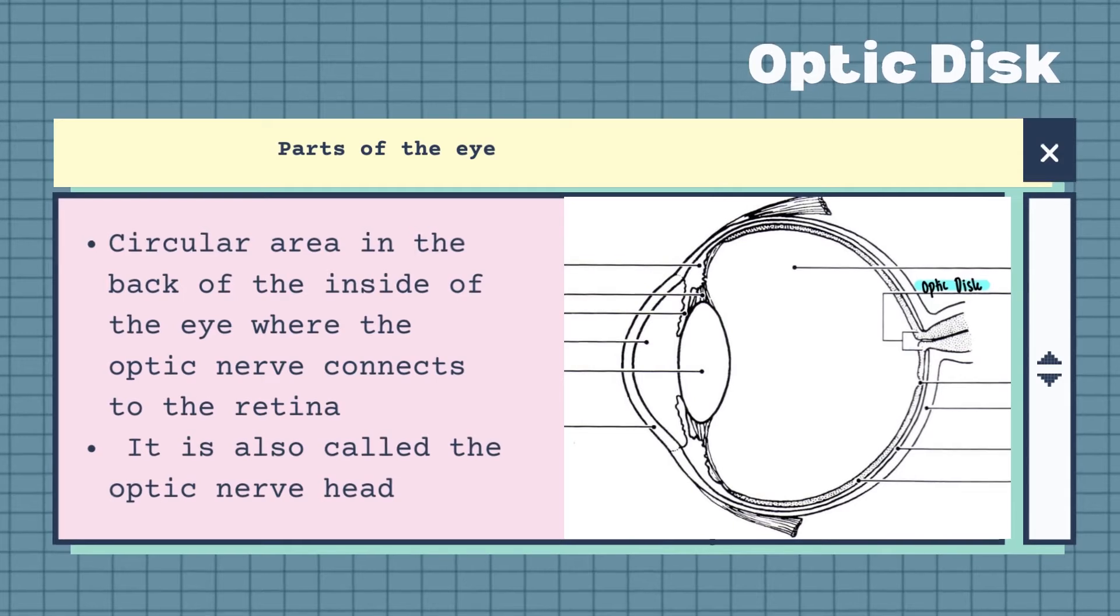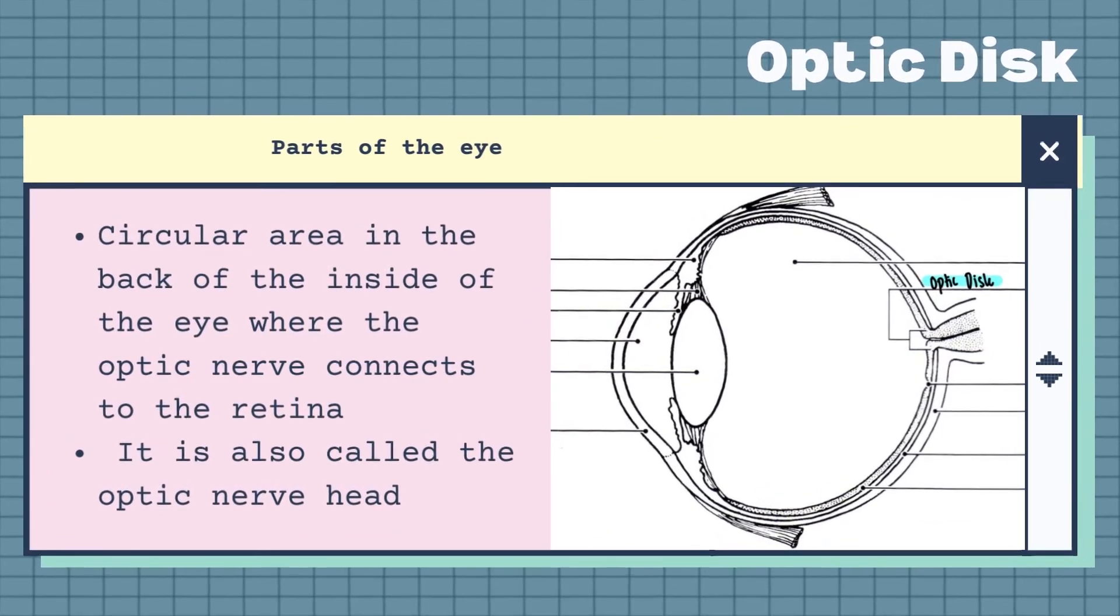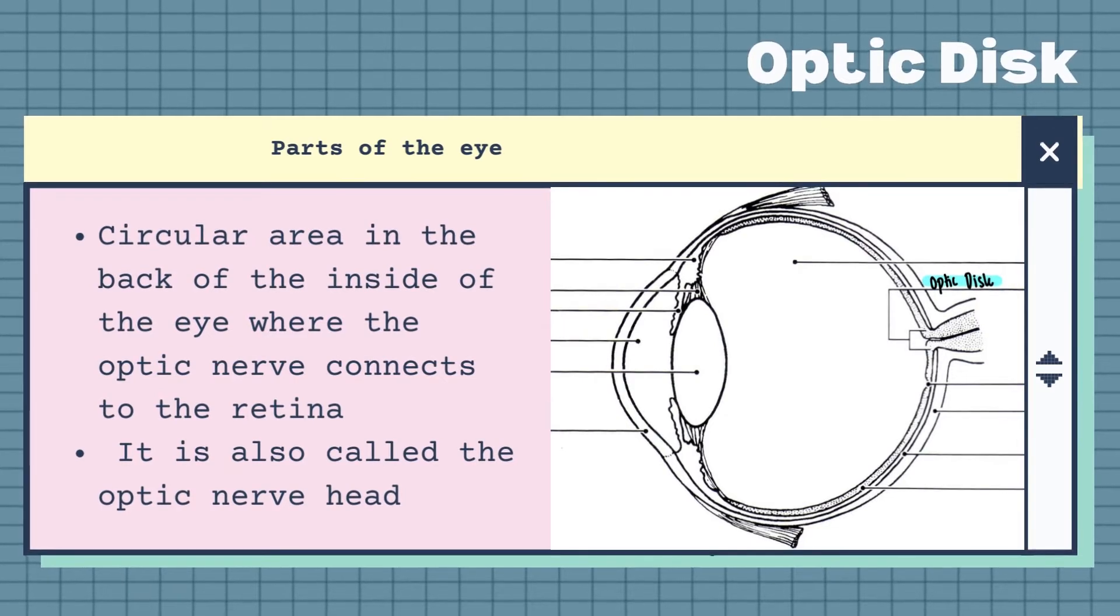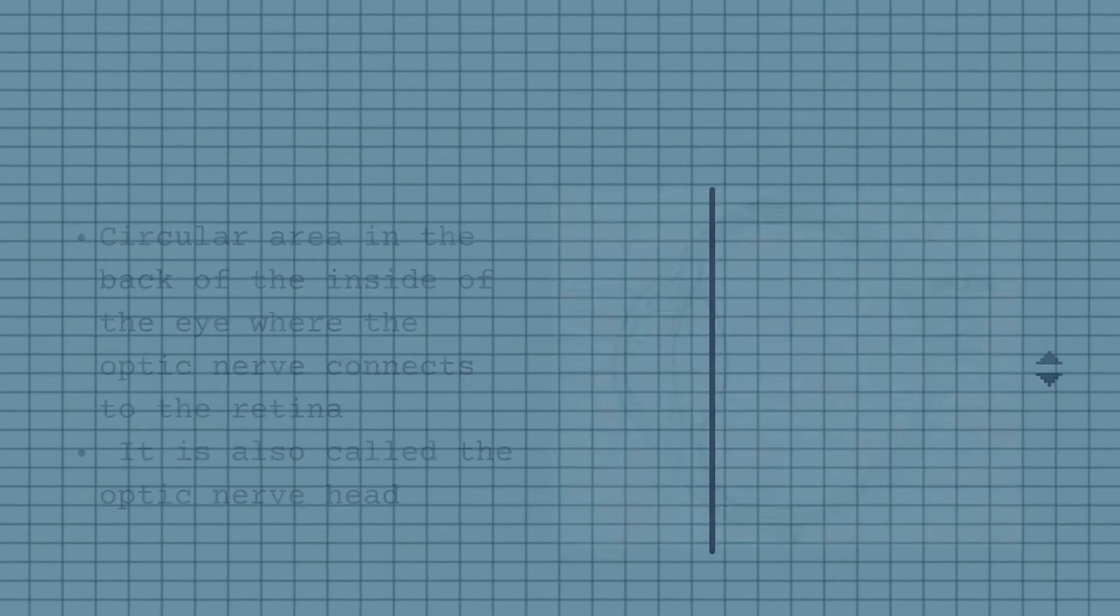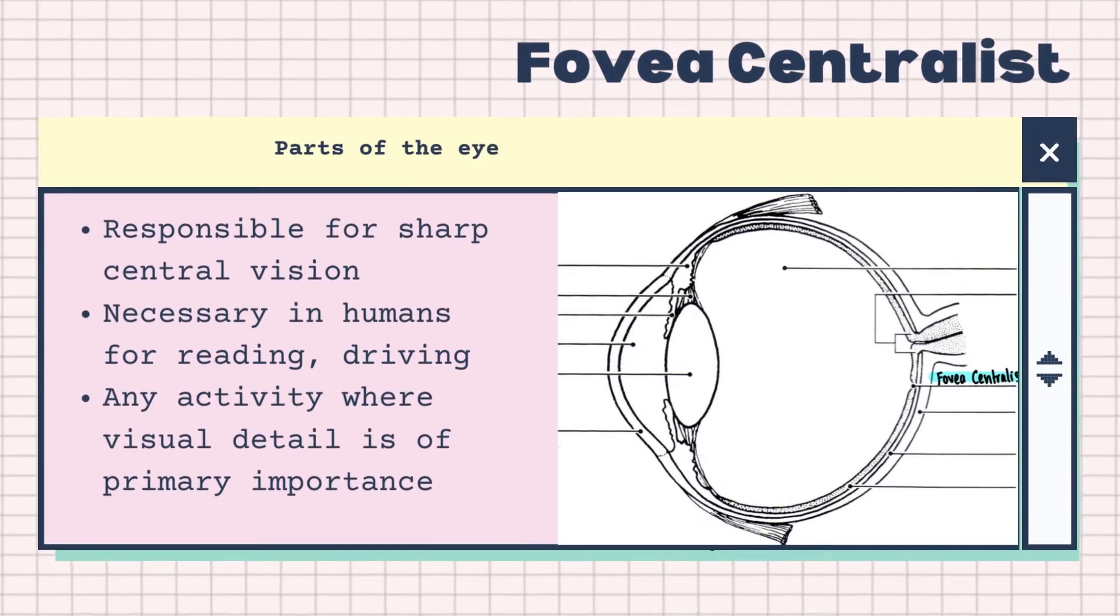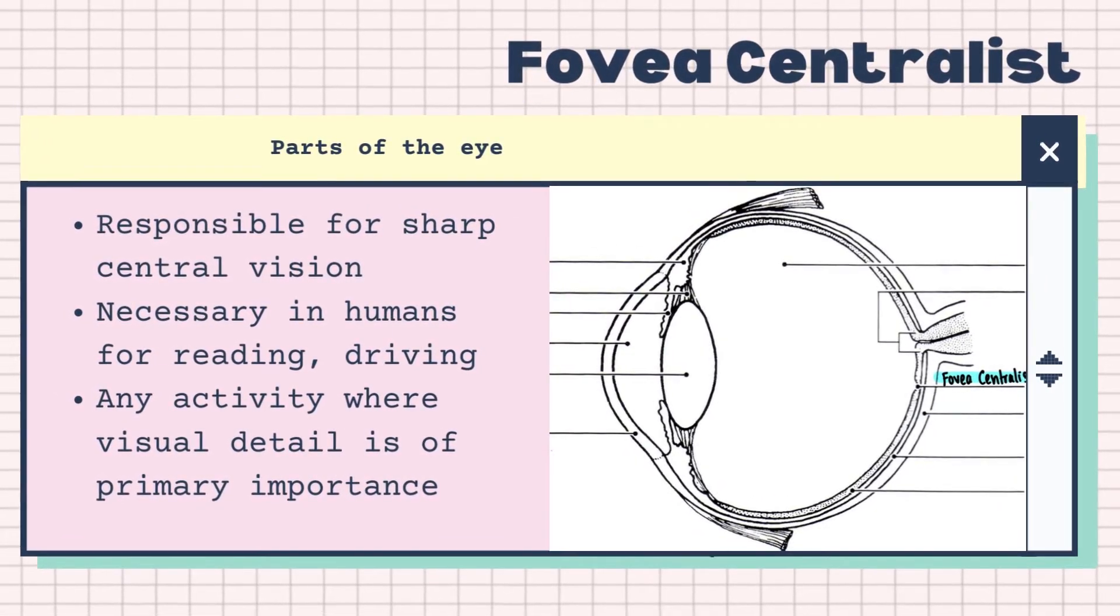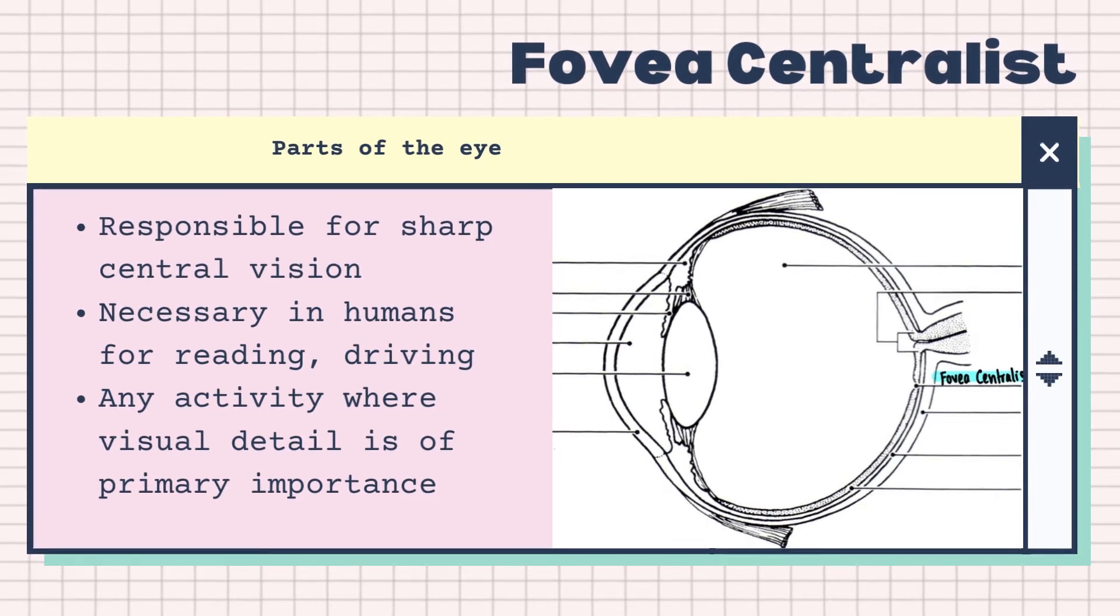The optic disc is the circular area in the back of the eyes where the optic nerve connects to the retina. This is also called the optic nerve head. The fovea is responsible for sharp central vision which is necessary in humans for reading, driving and any activity where visual detail is of primary importance.